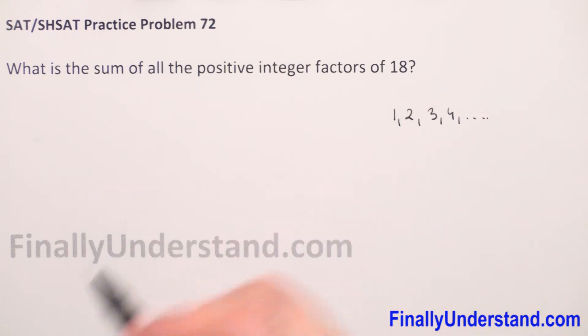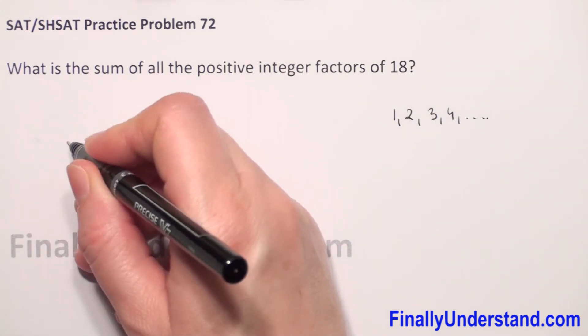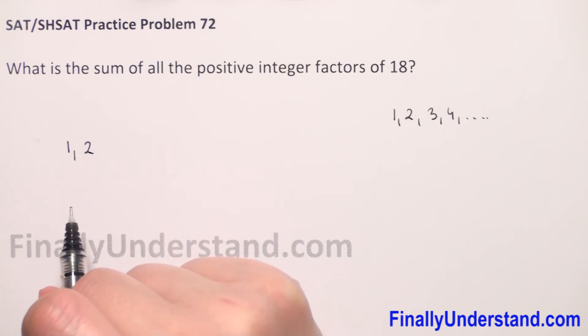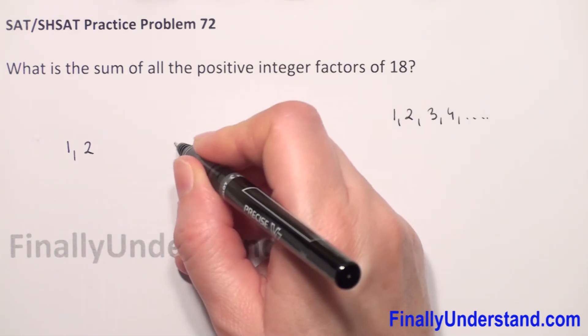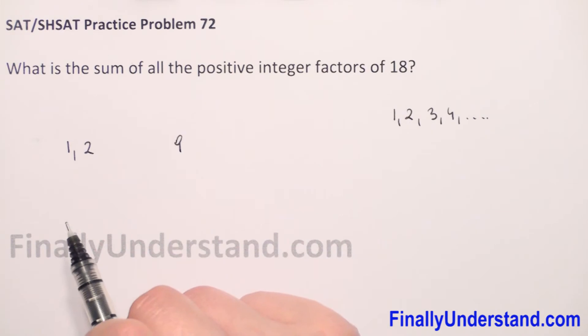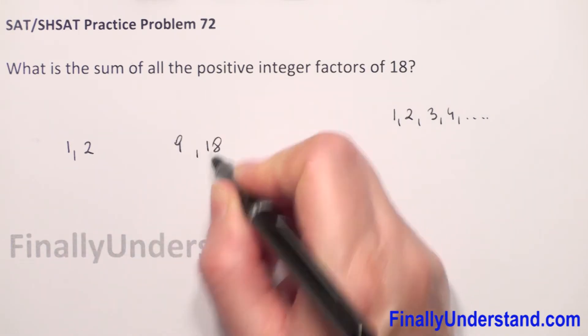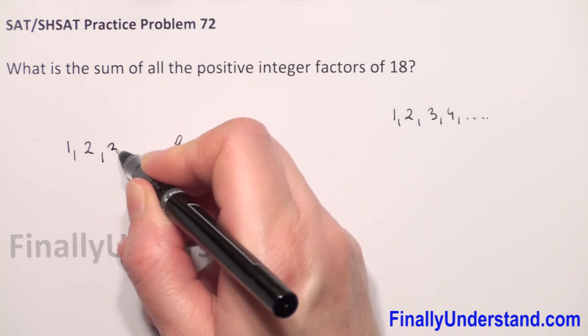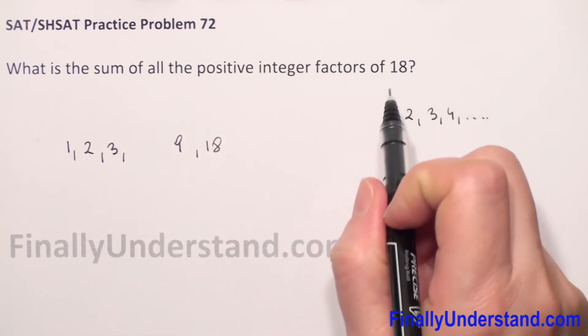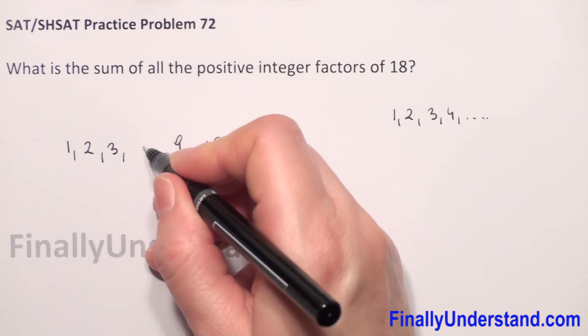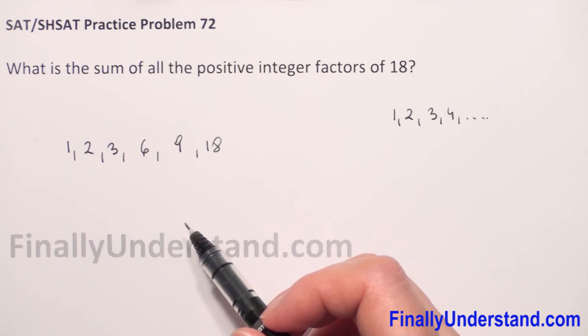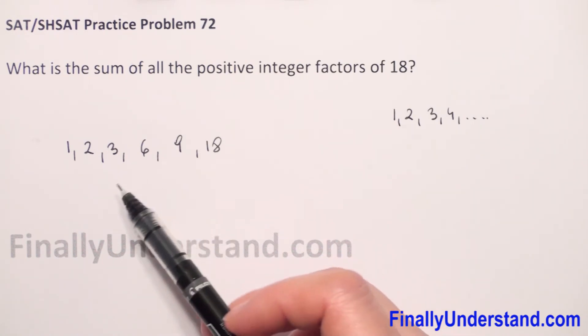So we have here 18. We know that 18 we can divide by 1, 2. When we divide by 2 will be 9 so we have also 9. When we divide by 1 is 18. What else? We can divide 18 by 3. When we divide 18 by 3 will be 6 so 6 is also factor of our number and I think that's it.